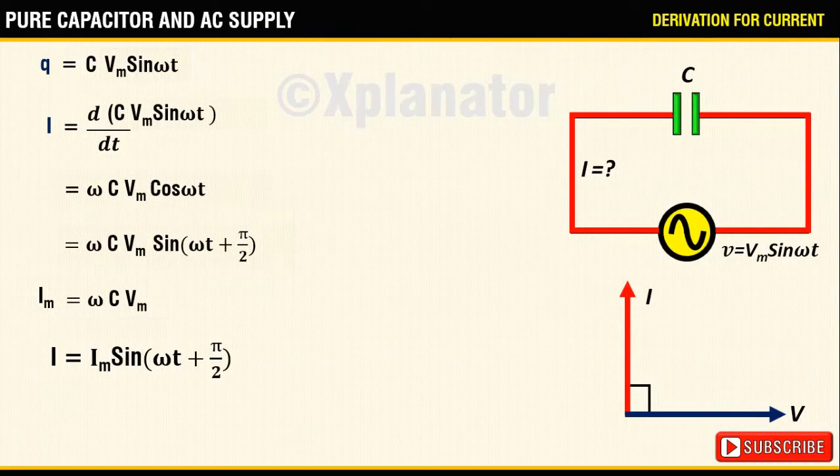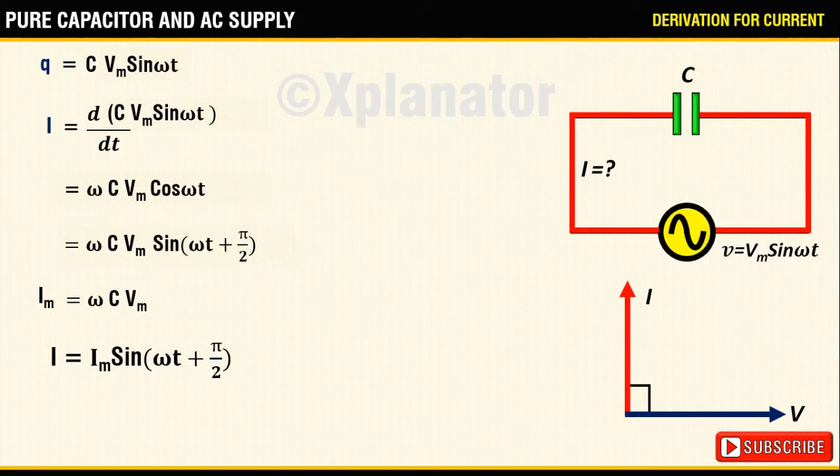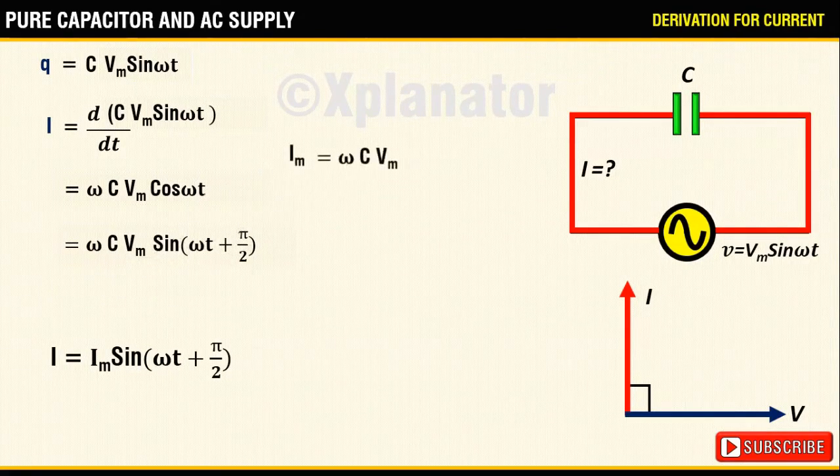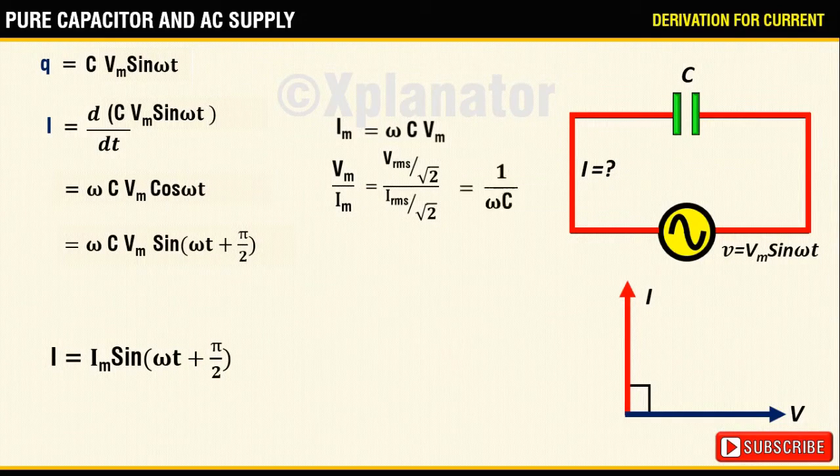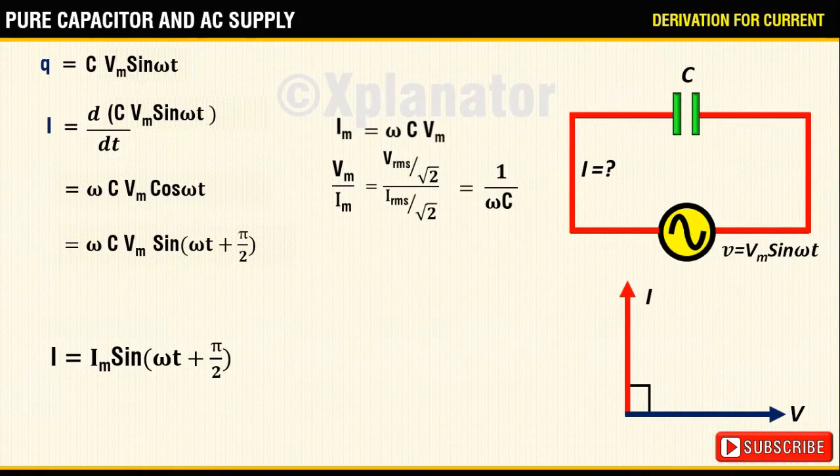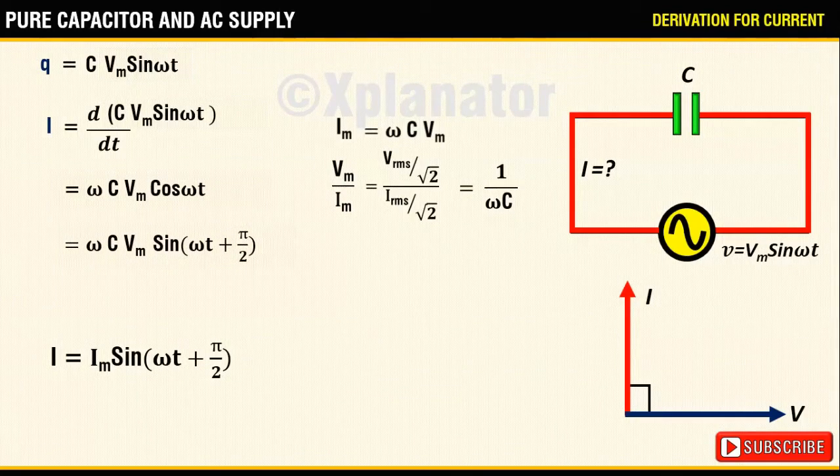Going back to the equation of Im, if you rearrange the terms to get the ratio Vm by Im, it will equate to 1 upon omega C and it remains the same even when the ratio Vrms by Irms is considered.